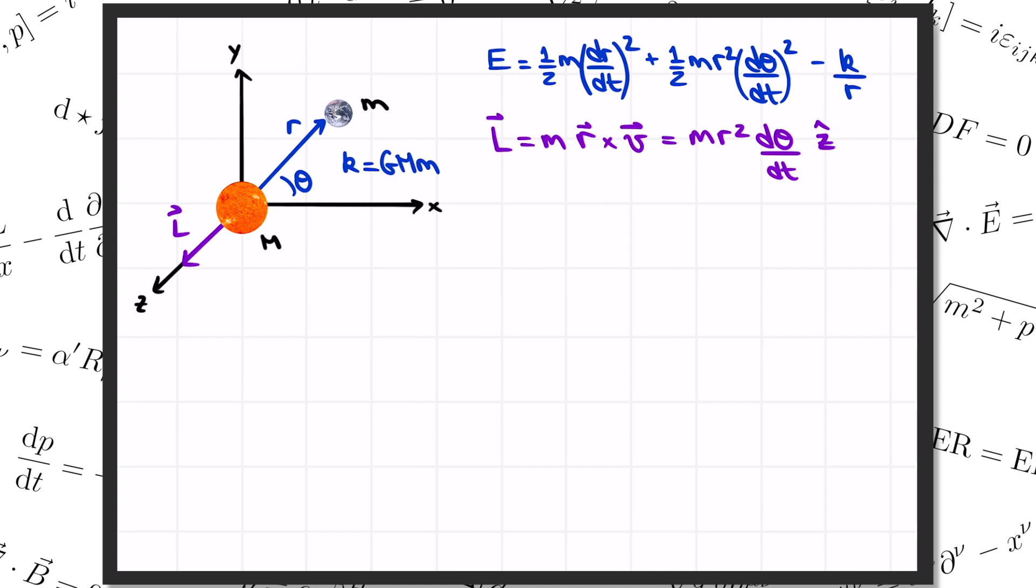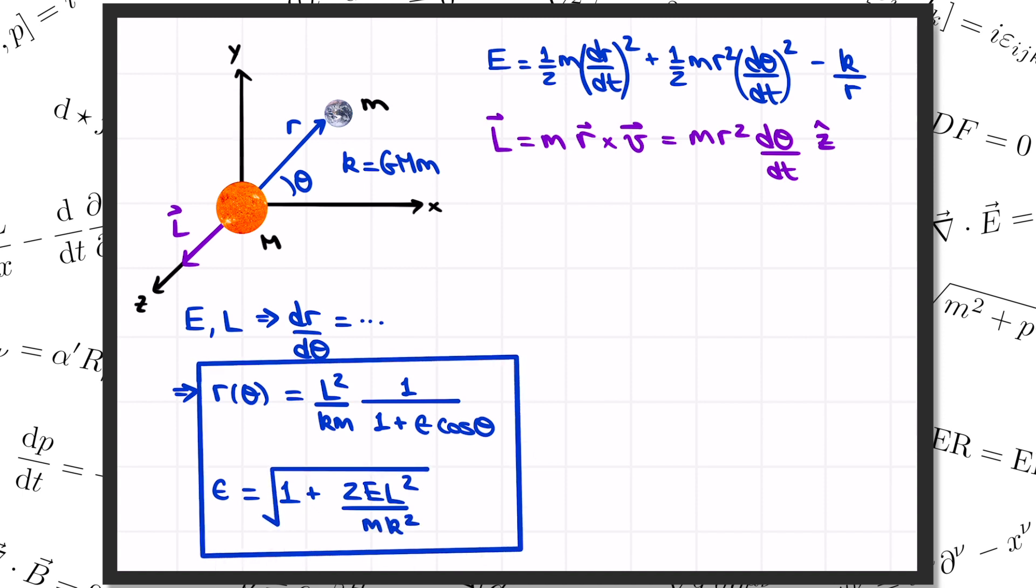Last time, we combined these two equations for e and l to get rid of all the dt's. That gave us an equation for dr by d theta, which we were then able to solve for r as a function of theta. We got r equals l squared over km times 1 over 1 plus epsilon cosine of theta. And this is the equation for a conic section of eccentricity epsilon, where we showed that epsilon equals 1 plus 2 e l squared over mk squared square root. When epsilon is between 0 and 1, this is the equation of an ellipse, which is the typical case for a planet orbiting a star. So that's what we covered last time.